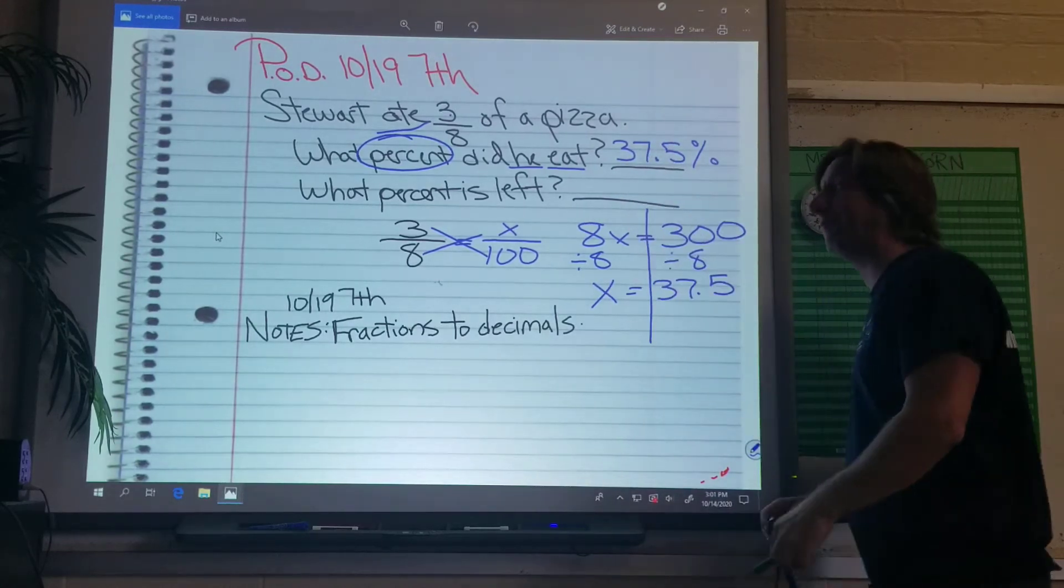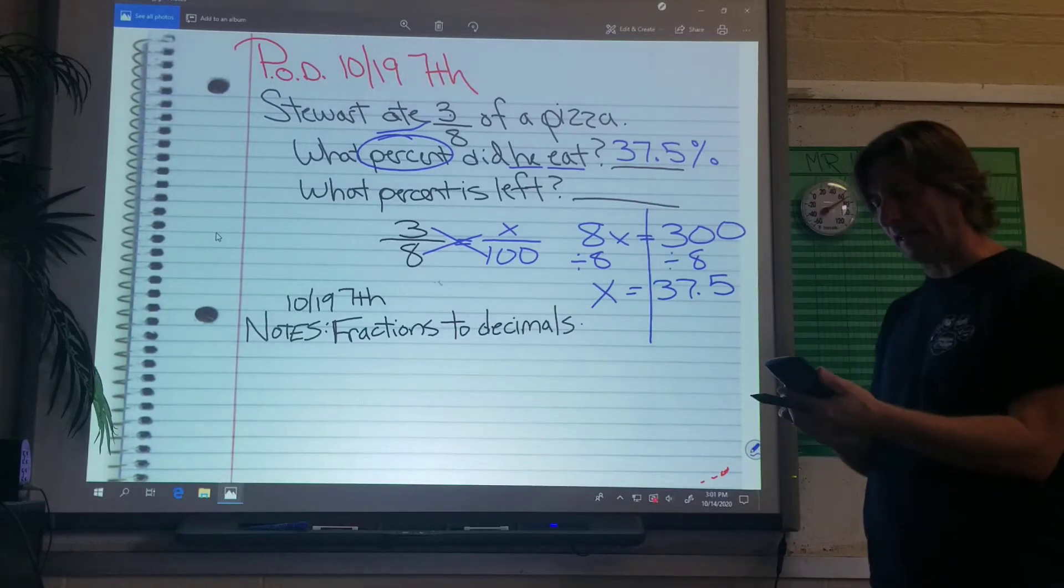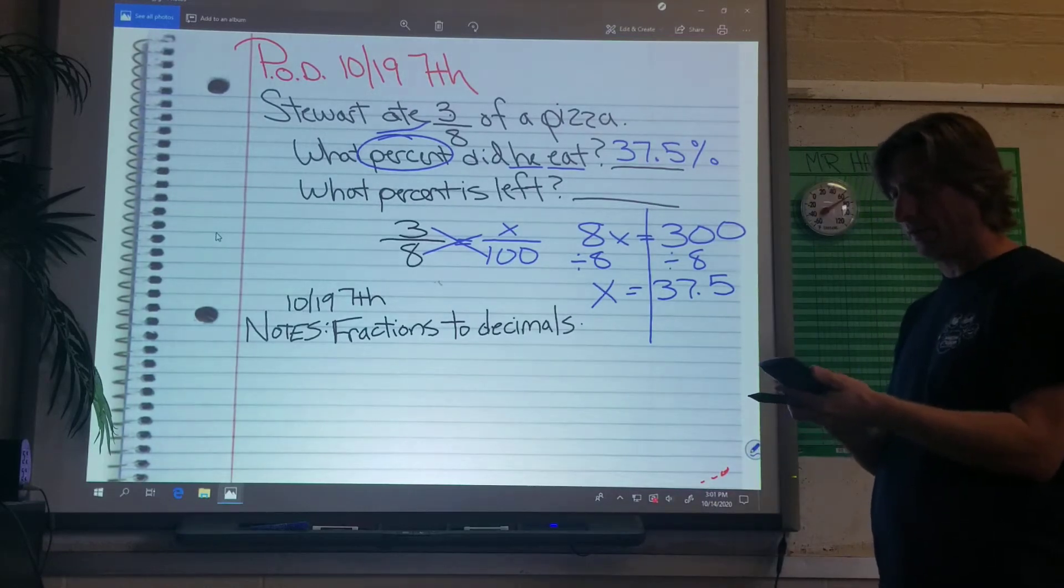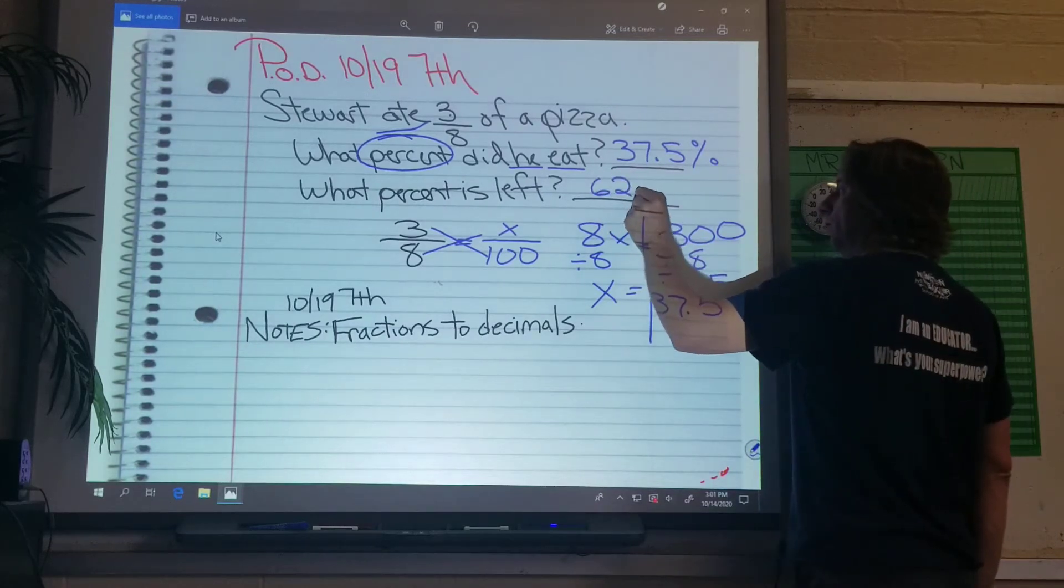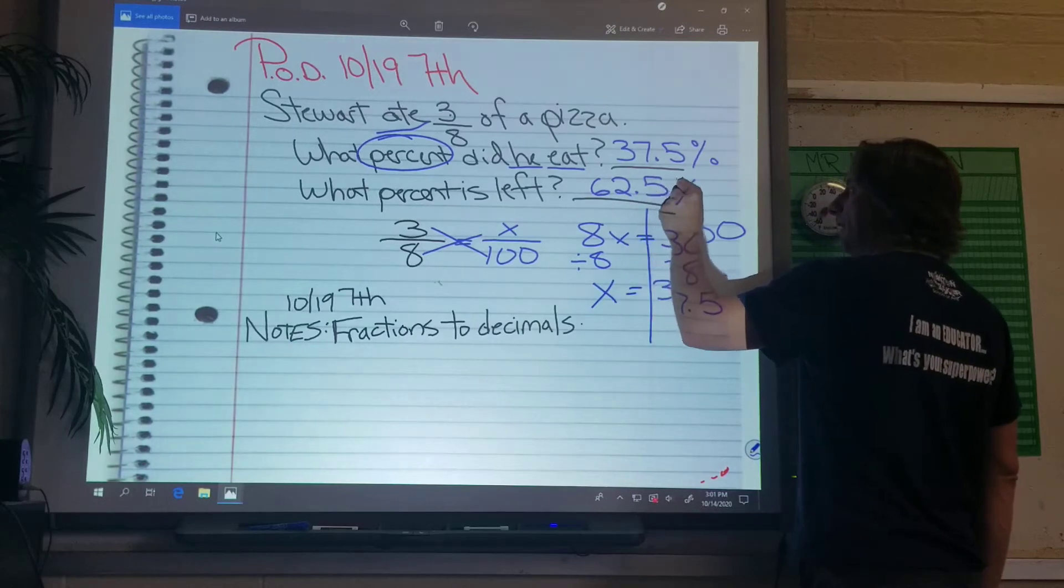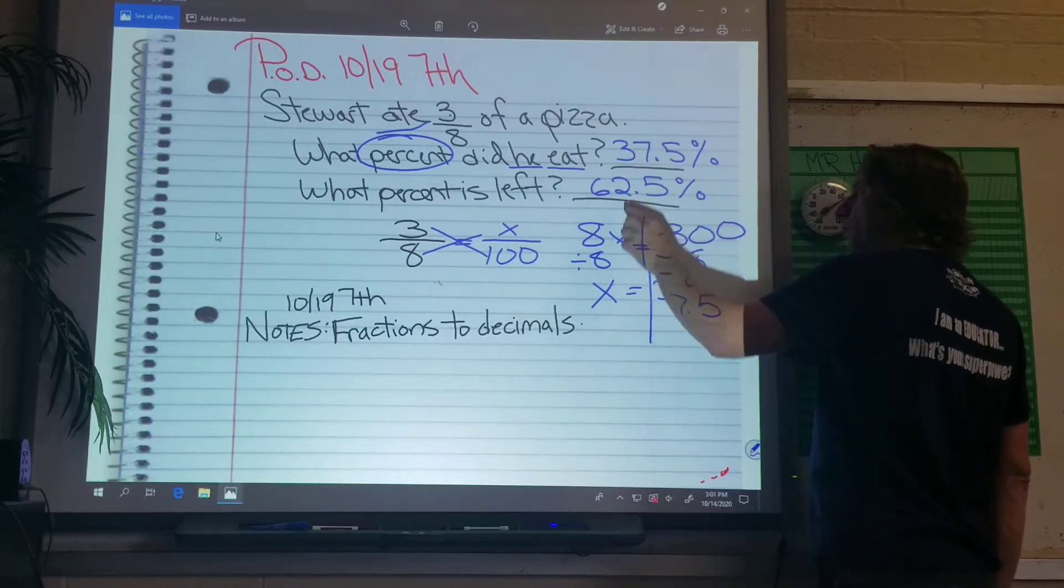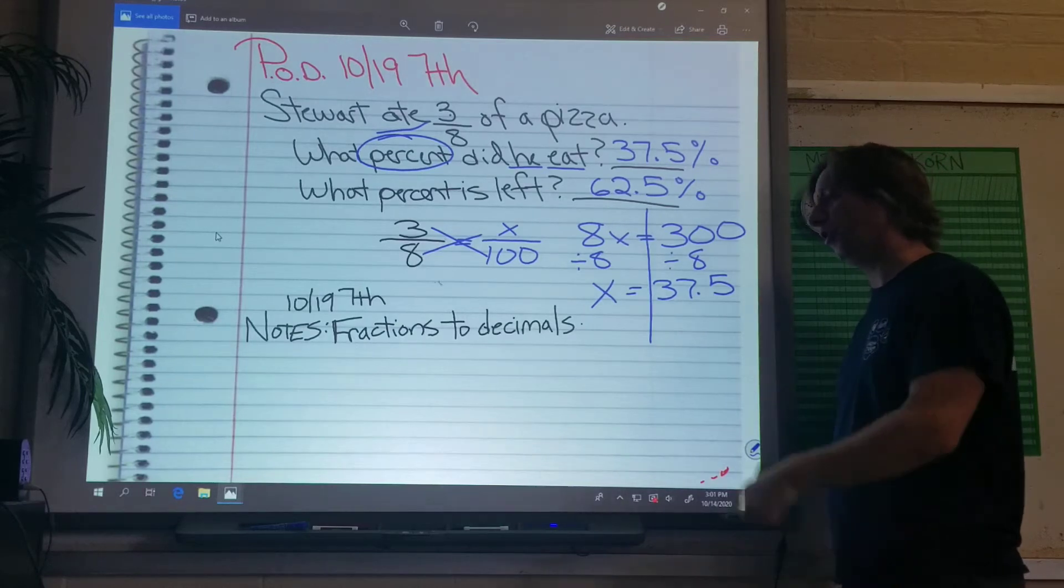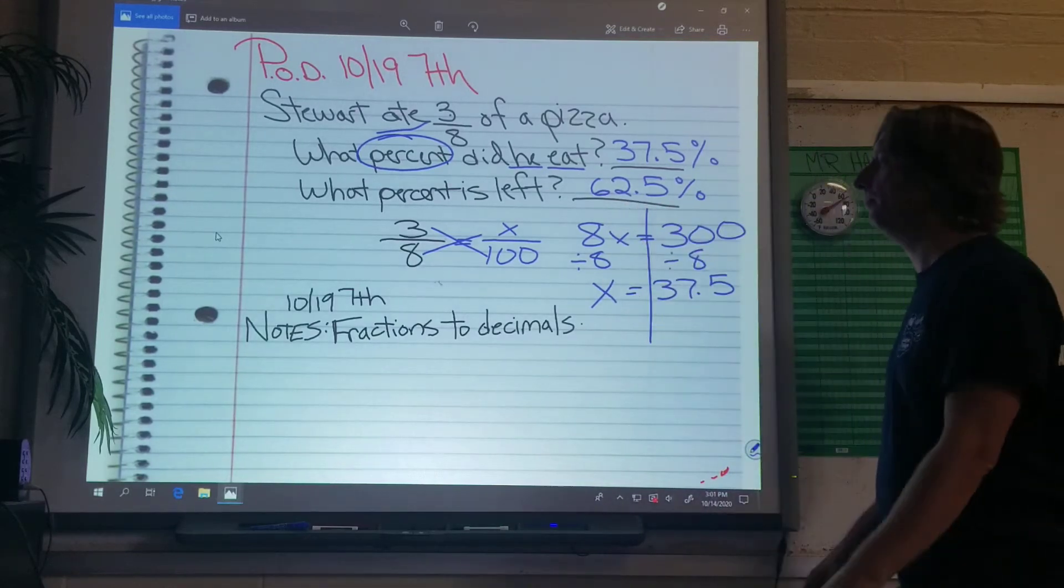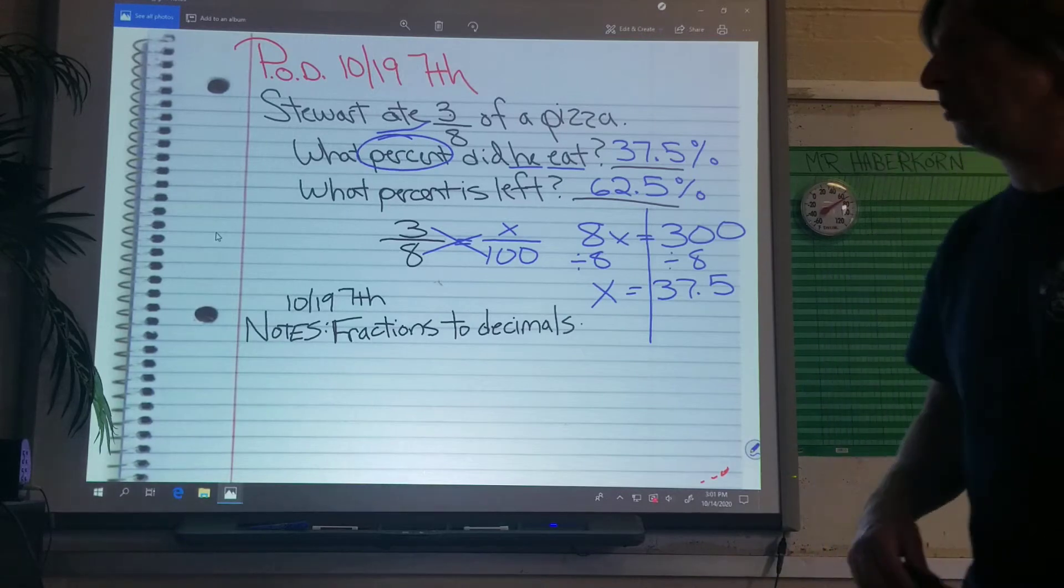So he ate 37.5% of the pizza. So we've got to figure out how much is left. Well, all we do is subtract that from 100, right? Percents out of 100. Now I get 62.5% is left. Guess what those should always add up to? 100%, right? The whole pizza? 100% is the whole thing. Okay. Not too bad.